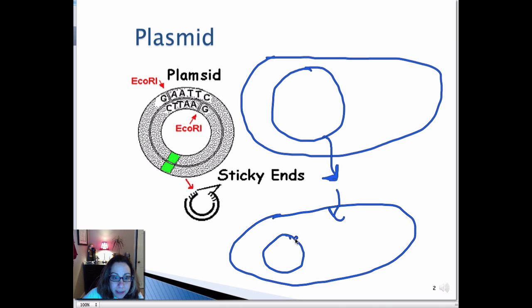And now if that plasmid has an antibiotic-resistance gene in it, this bacteria is now resistant, as this one was resistant. So plasmids are a very nice tool in molecular biology.